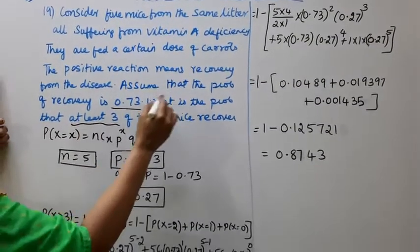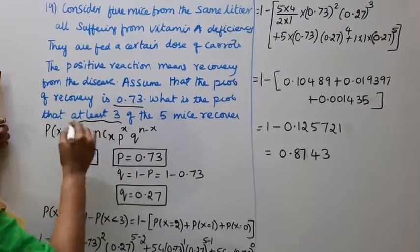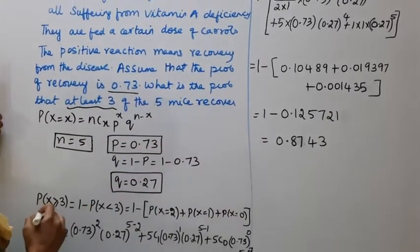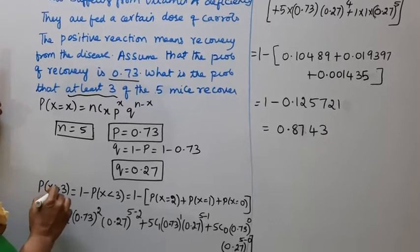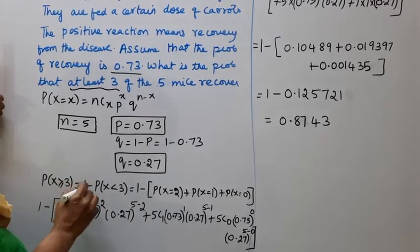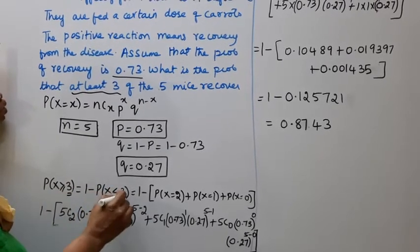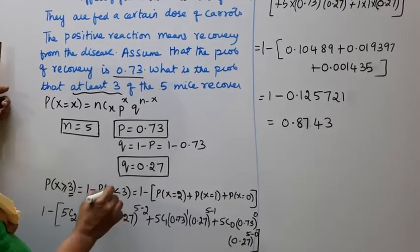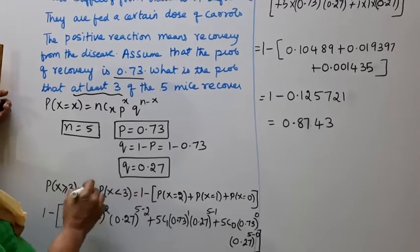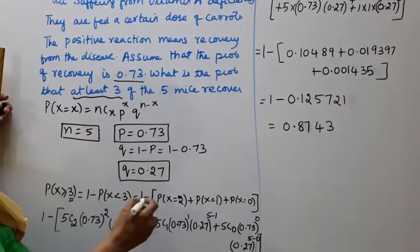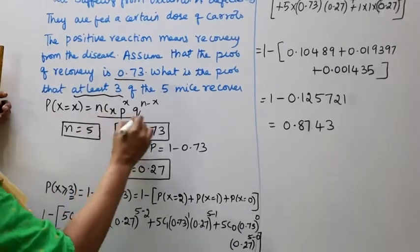The question asks what is the probability that at least 3 mice recover. So P(X ≥ 3) = 1 - P(X < 3). Less than 3 means 2, 1, 0. Now substitute in the formula.